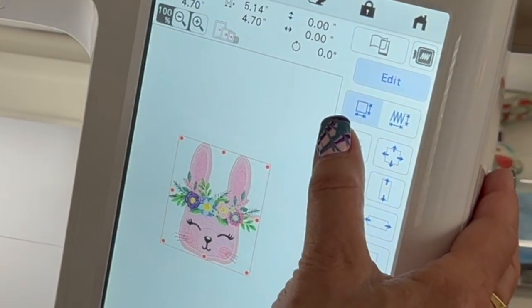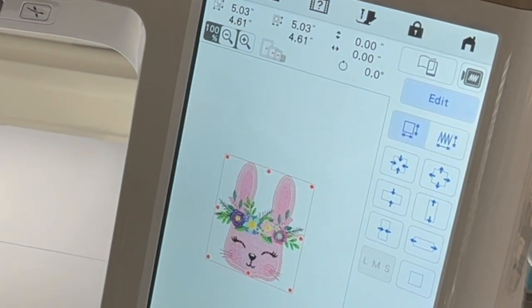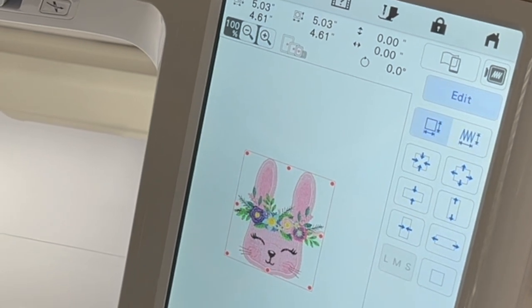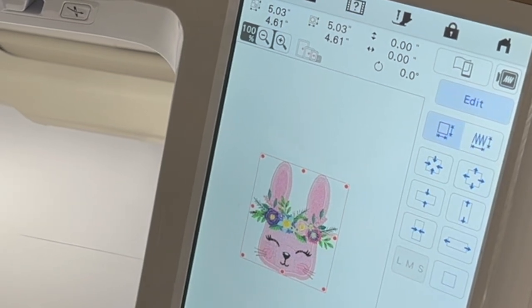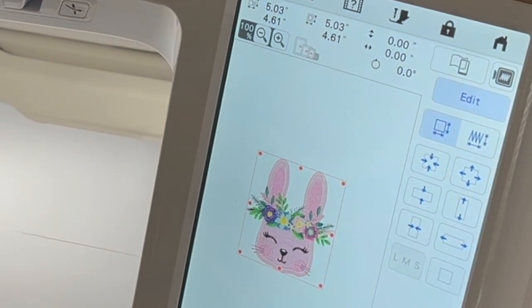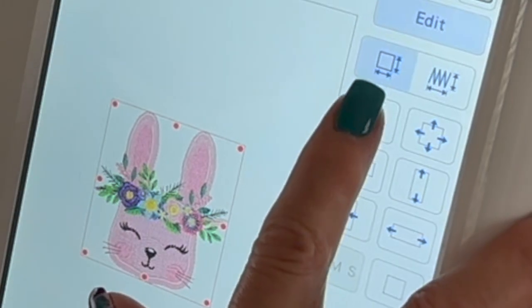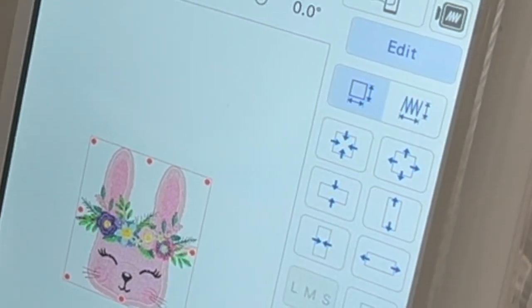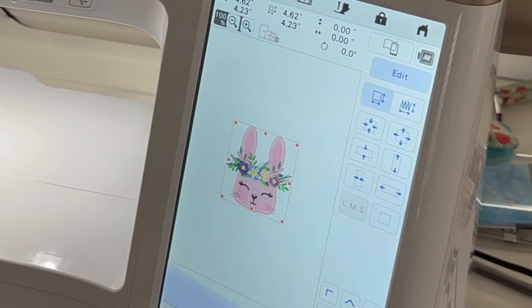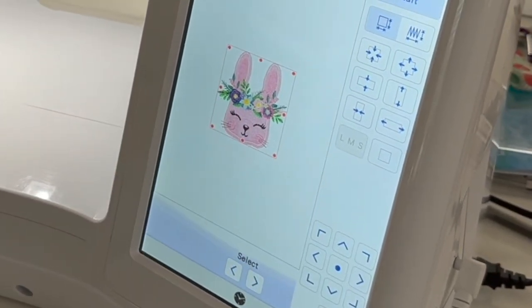So the first thing I want to do here is I'm just going to make it smaller. Maybe you want to use it on a baby onesie or the corner of a quilt or something. I'm going to keep pushing that button there and it will bring it down approximately 10%.